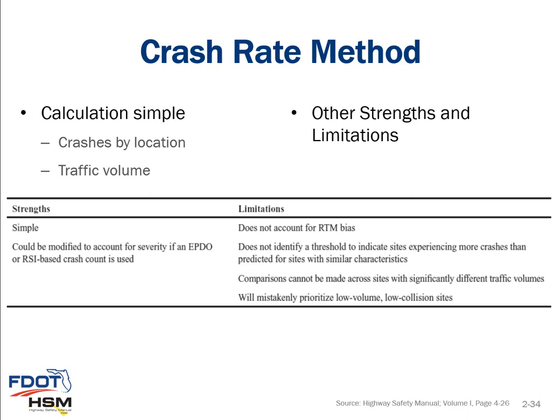One of the first methods discussed in webinar one is the crash rate method. The method is simple — it accounts for crashes by location and uses traffic volume. However, it does not account for regression to the mean, and you can see directly from the Highway Safety Manual the strengths and limitations. It also does not provide a linear representation; the crashes seen historically are not linear, but the crash rate method represents them as a linear representation.